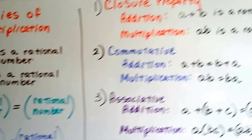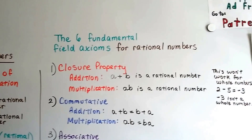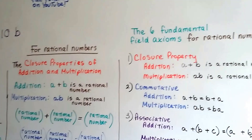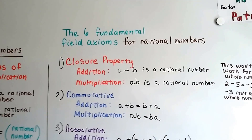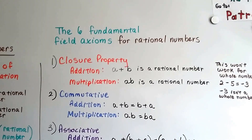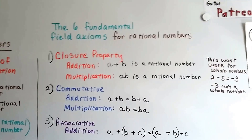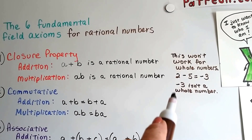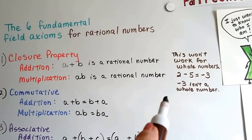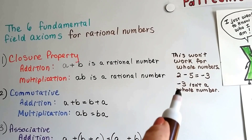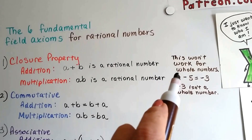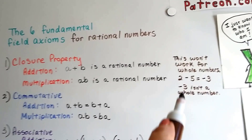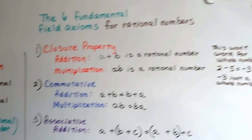The six fundamental field axioms for rational numbers include the closure property — a plus b is going to be a rational number, and a times b will be a rational number. Now, this won't work for whole numbers. The set of whole numbers would be one, two, three, four, five, and if we had to take away a five, it would be negative three, and that isn't a whole number.